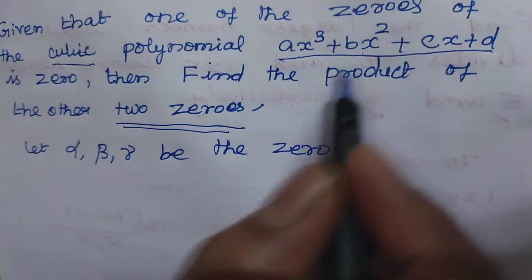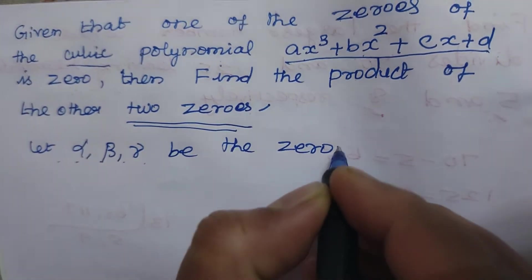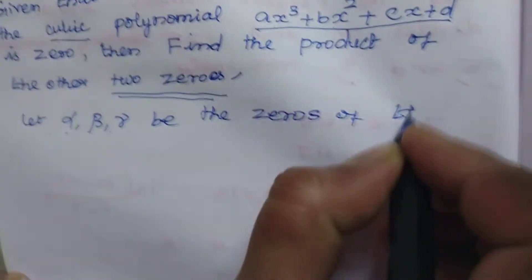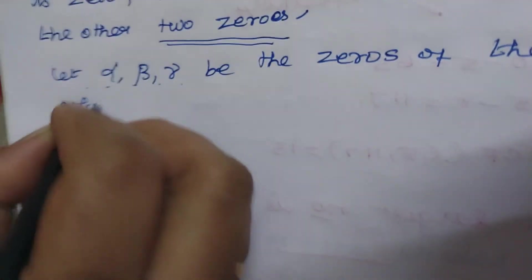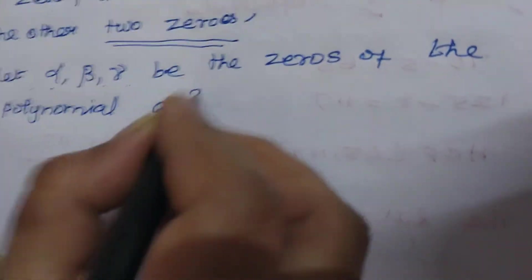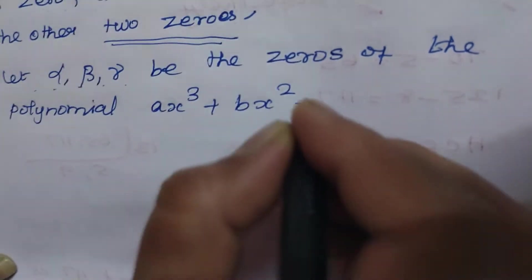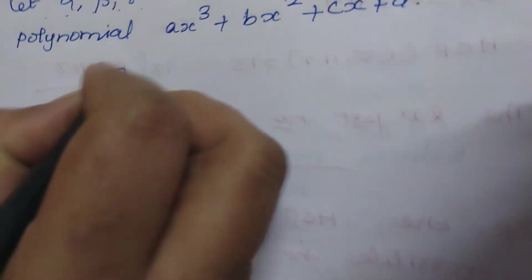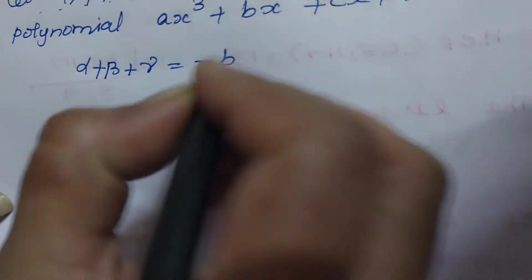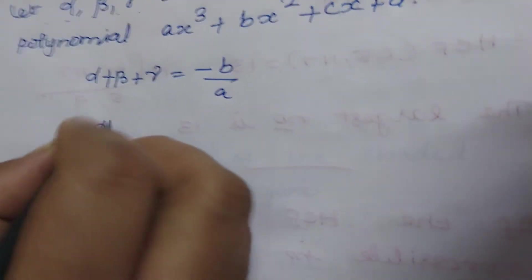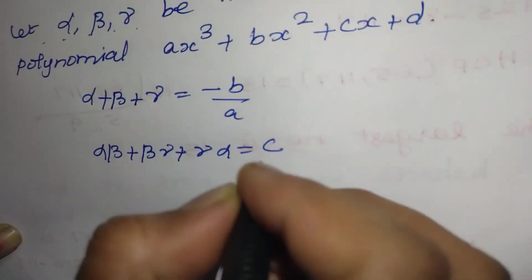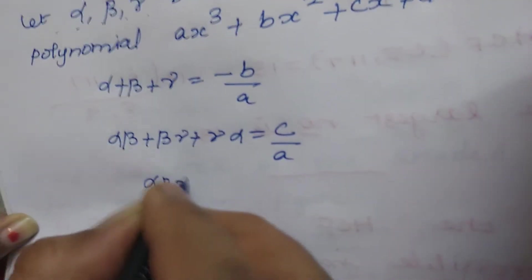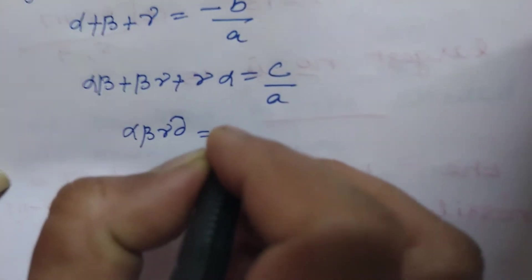So here it is given that the polynomial is a cubic polynomial. Therefore let alpha, beta, gamma be the zeros of the polynomial Ax³ + Bx² + Cx + D. Then we know the relations: alpha + beta + gamma = -B/A; alpha·beta + beta·gamma + gamma·alpha = C/A; alpha·beta·gamma = -D/A.